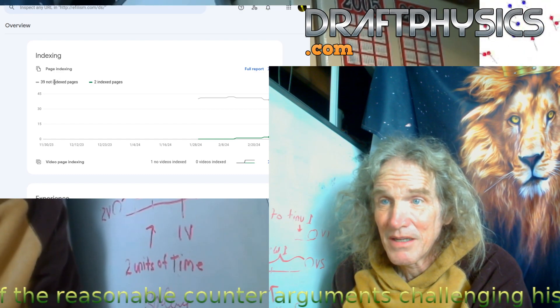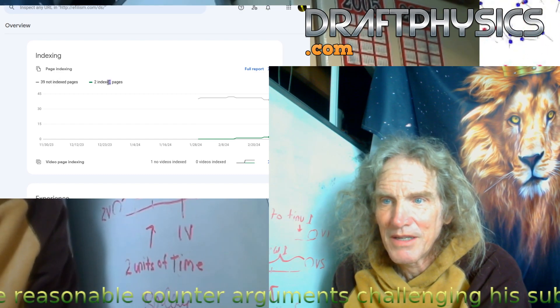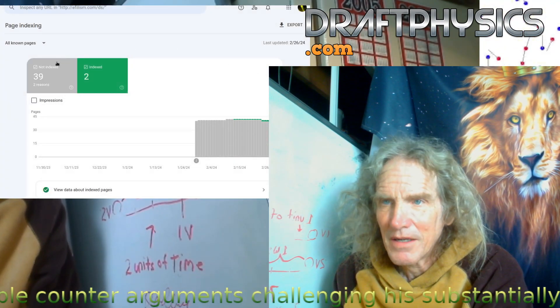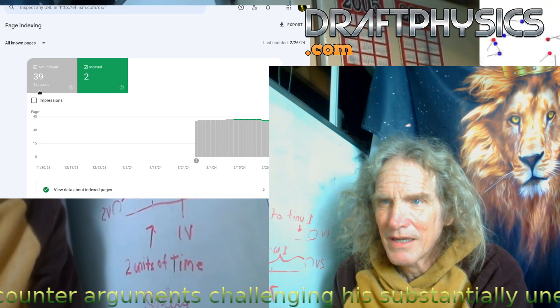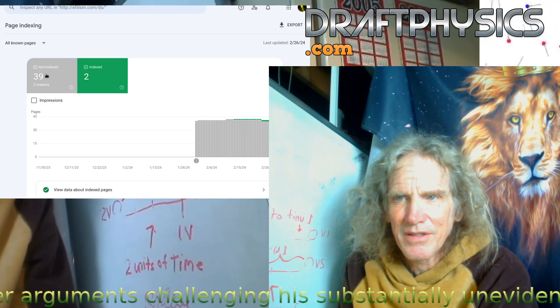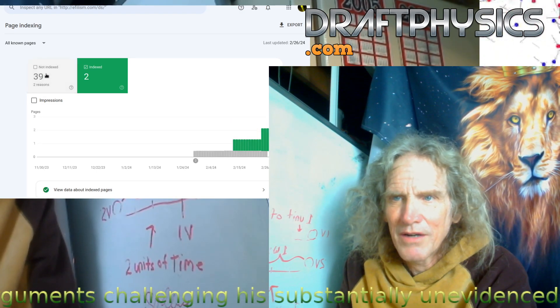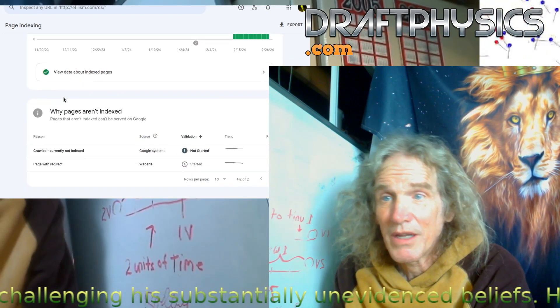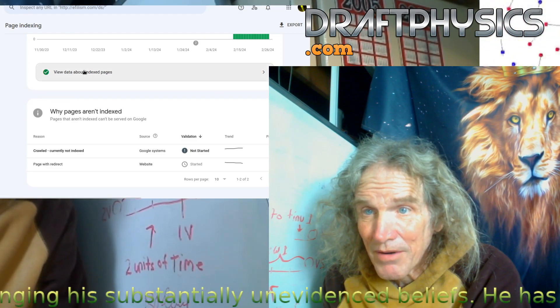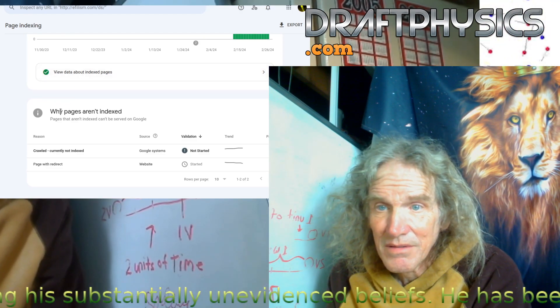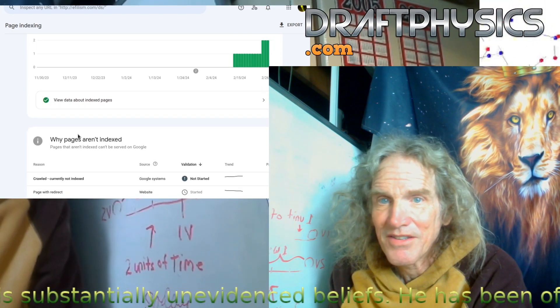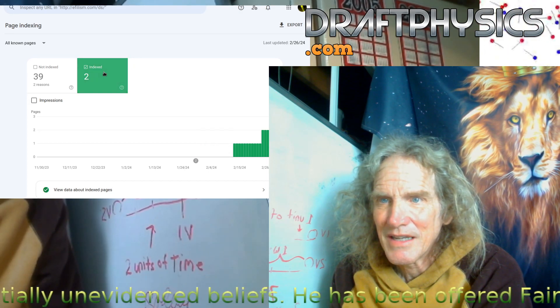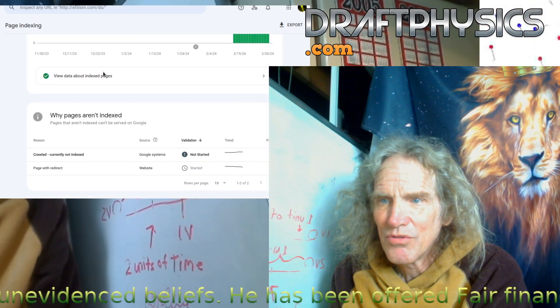The web performance, zero clicks. So that's for the entire website, nothing. Not a single search engine reference, nothing. And then the page indexing is kind of funny, so we'll go to that. Two indexed pages, well, full report. So it's just kind of funny that they won't index 39 pages.